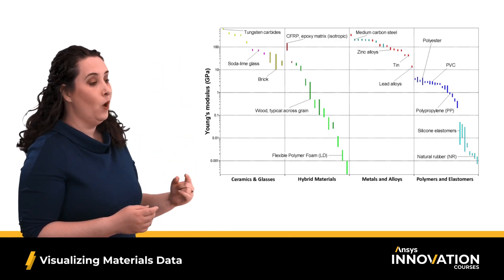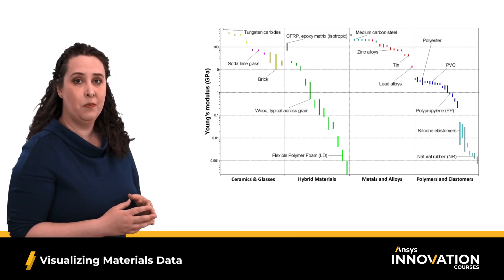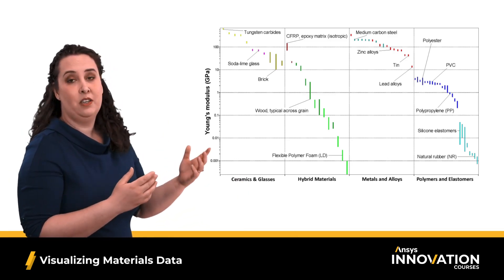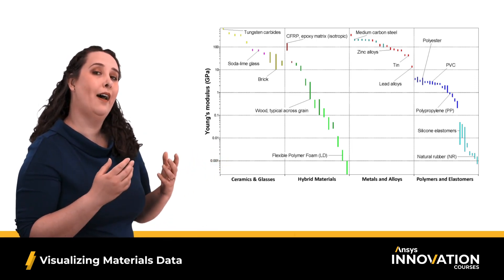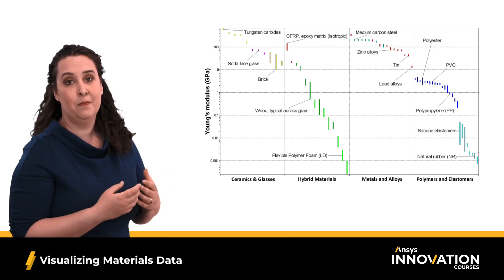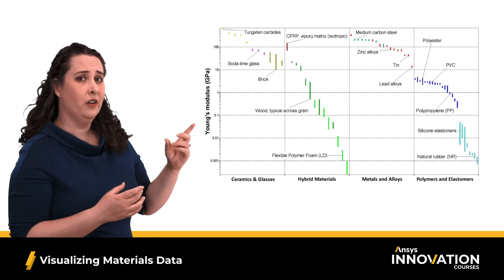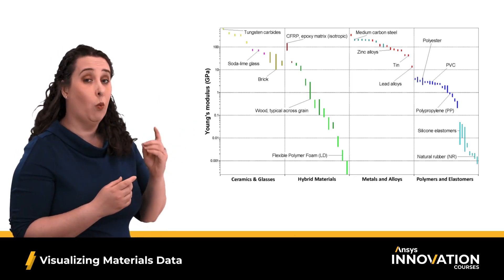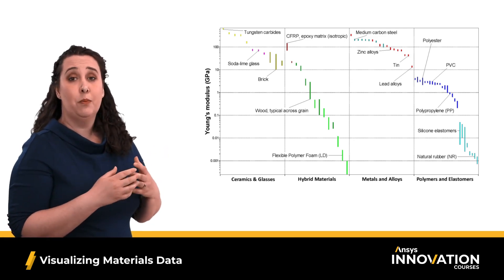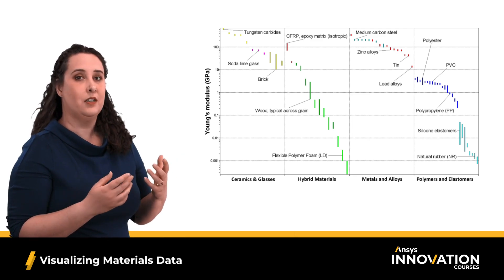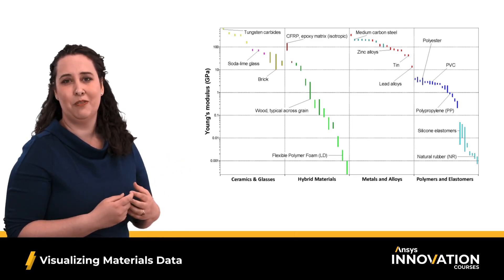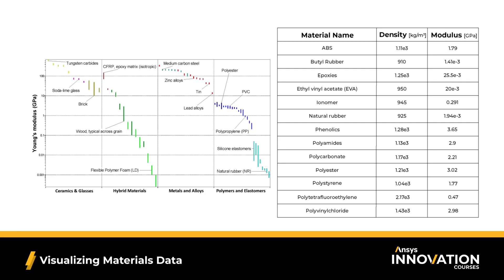Here, I've plotted Young's modulus on the y-axis, and I've split the x-axis based on material family. Now I can easily see the differences between my different material families, and I can see the differences between the materials within a family. The reason you're seeing these bars is because no material has just one value for a material property — material property data has a range, which encompasses various things like different qualities and types. If we compare our bar chart to a similar table of data, we can begin to see how the chart adds clarity. All of the information here is the same, but the chart allows characteristics and trends to be seen more easily and more quickly.